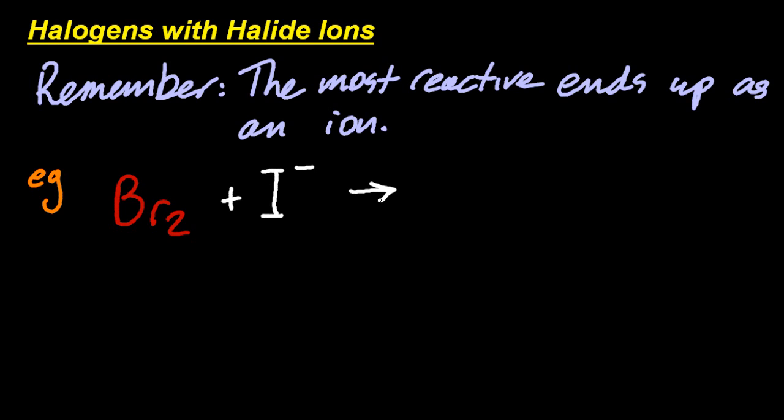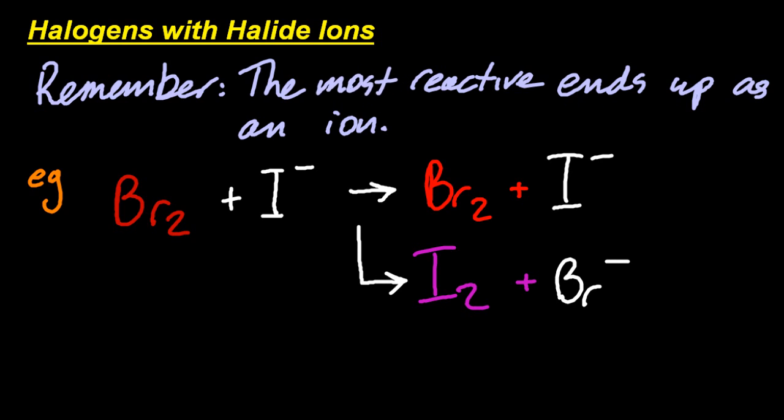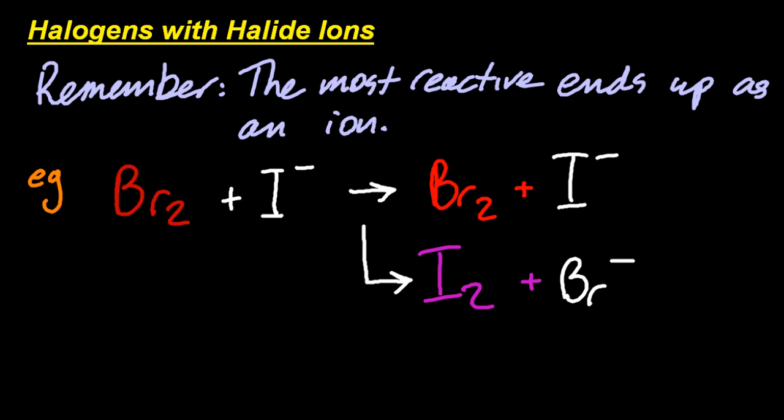So what do I mean by that? Well, let's look at an example. Bromine, that's red. And iodide ions, they're colourless. Now, there's two things that could happen here. The first thing is that nothing happens. It's red, it stays red, nothing happens. The second thing is that I could make purple iodine and the bromide ion, which is colourless. Now, how do I know which of these is true? The most reactive ends up as an ion. Bromine's more reactive than iodine. And so in the bottom equation, bromine has ended up as an ion. Bromine's the most reactive. It's higher in the halogens. Now, let's balance that out.